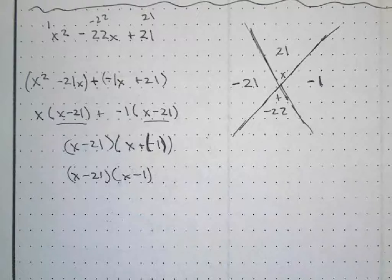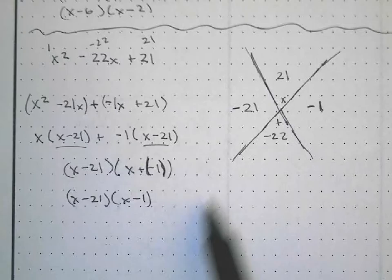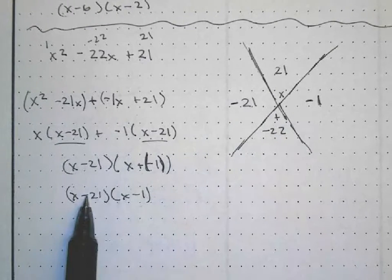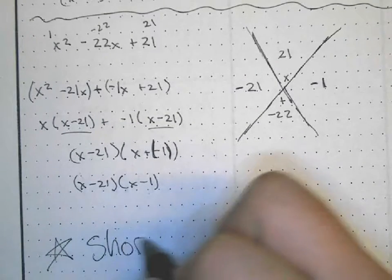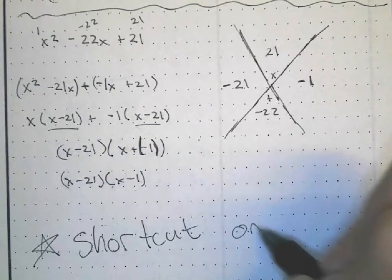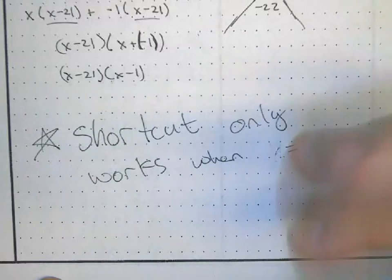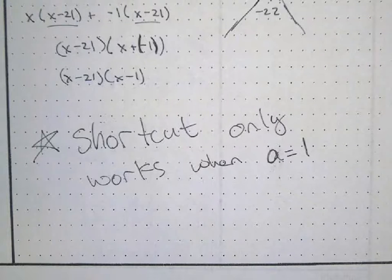That's the main idea behind factoring using the AC method specifically when a equals one. If you're seeing that shortcut, you can lean on it — but remember, the shortcut only works when a equals one. Do not use it when a does not equal one. Thanks for watching, and I hope you have a great rest of your day.